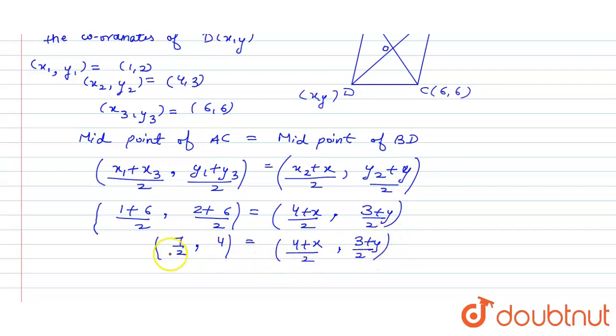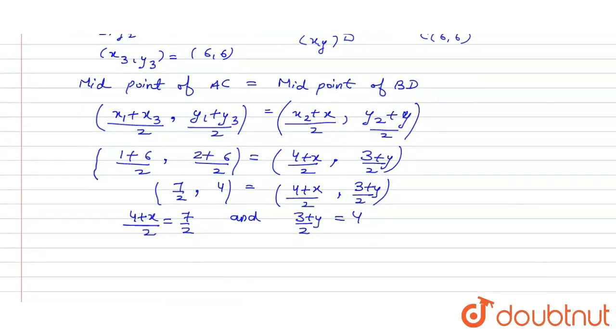Comparing both sides the coordinates of X and Y, what will we get? We will get 4 plus X upon 2 equals 7 by 2 and 3 plus Y upon 2 equals 4.